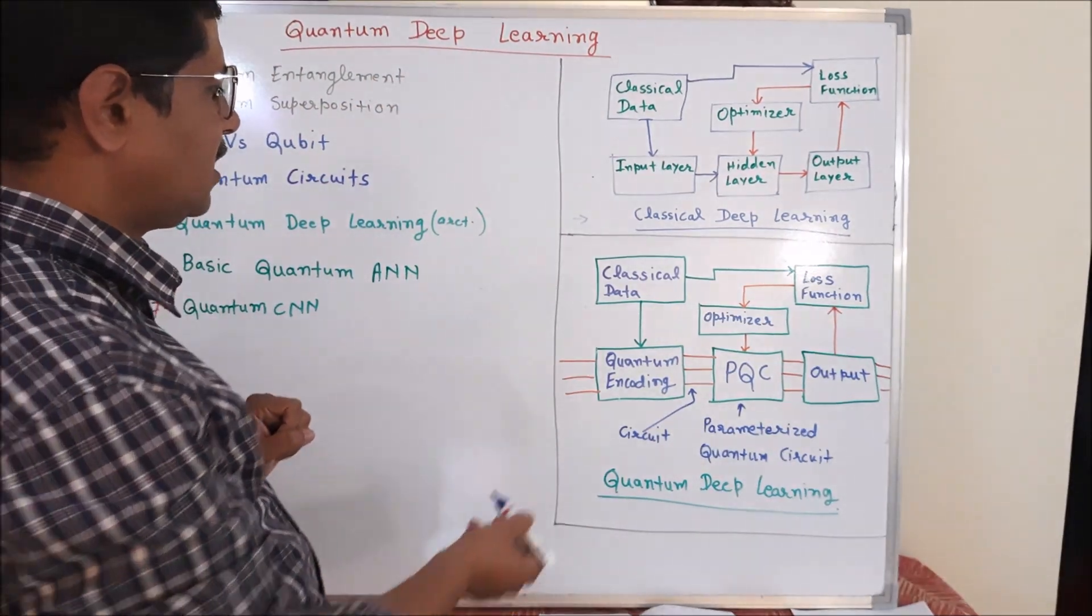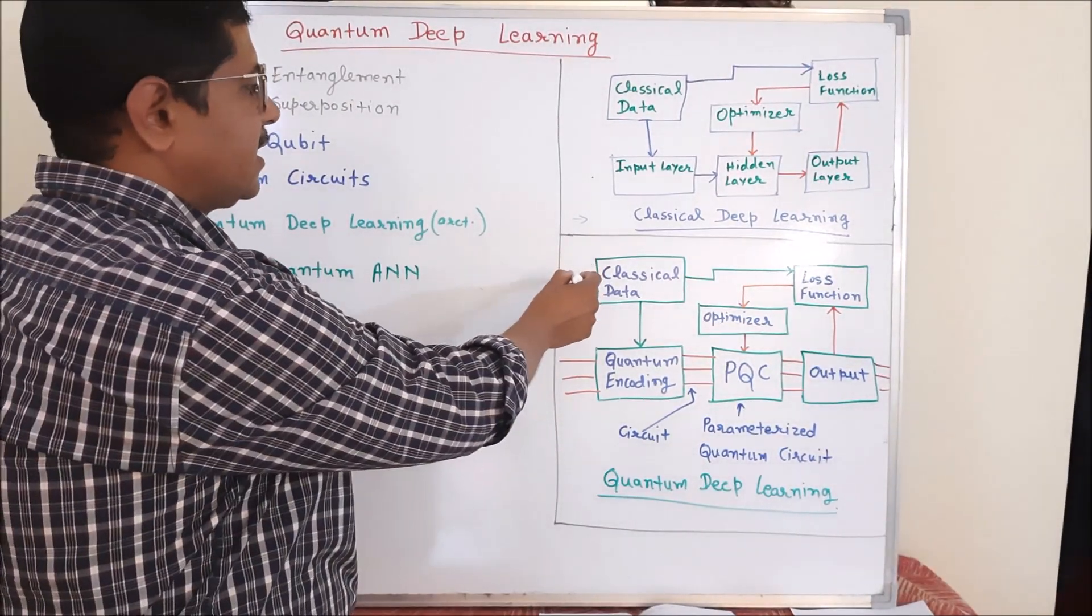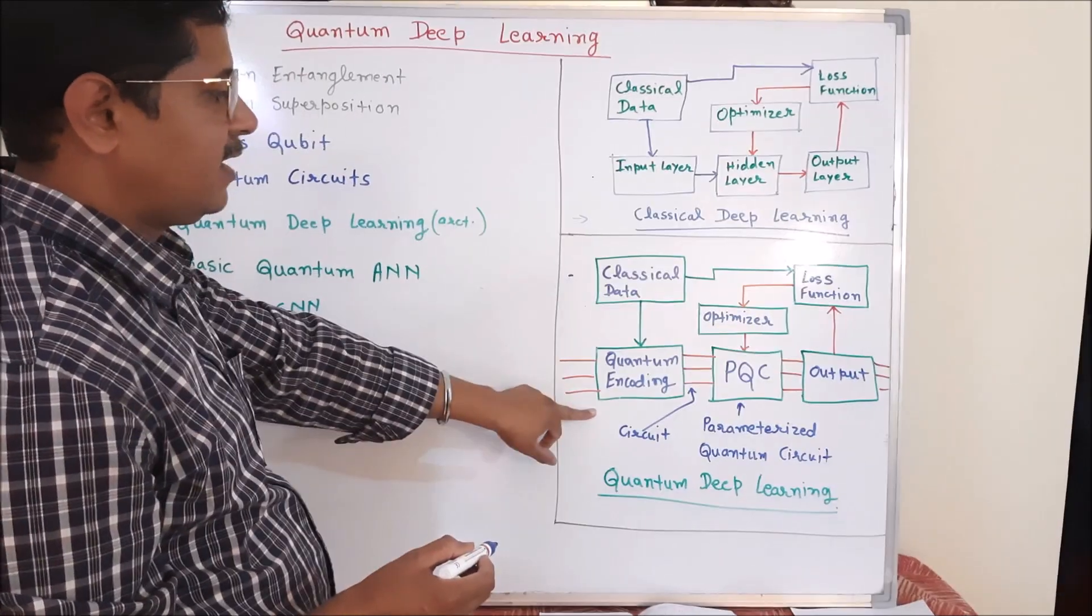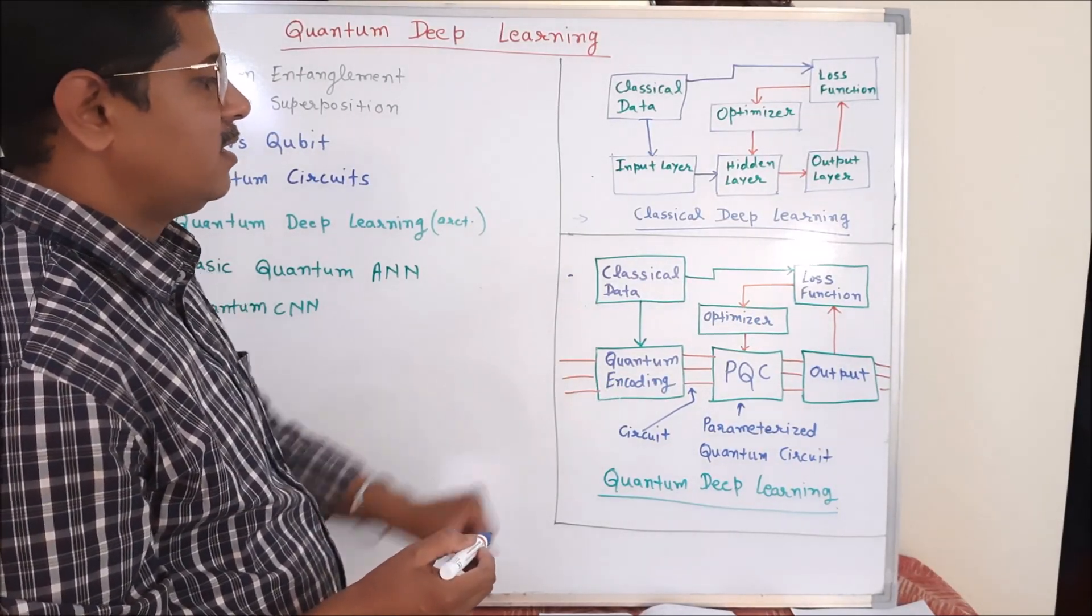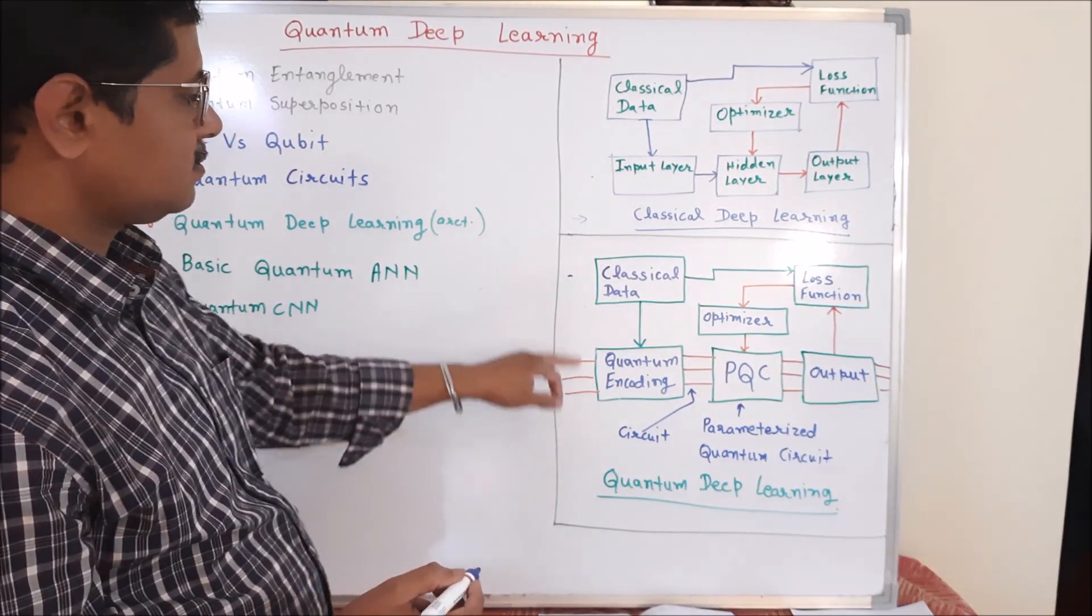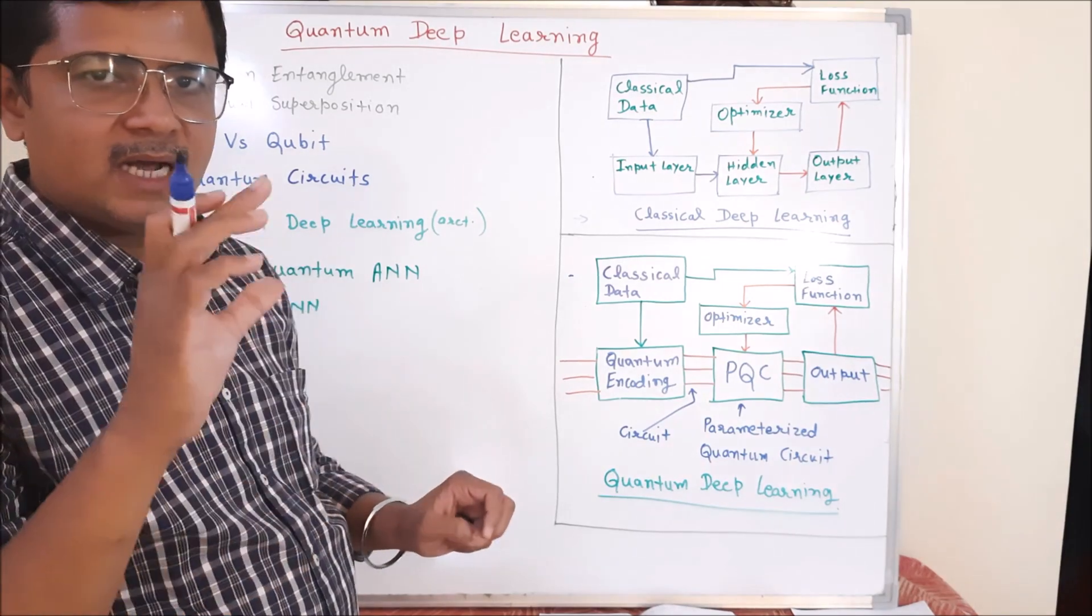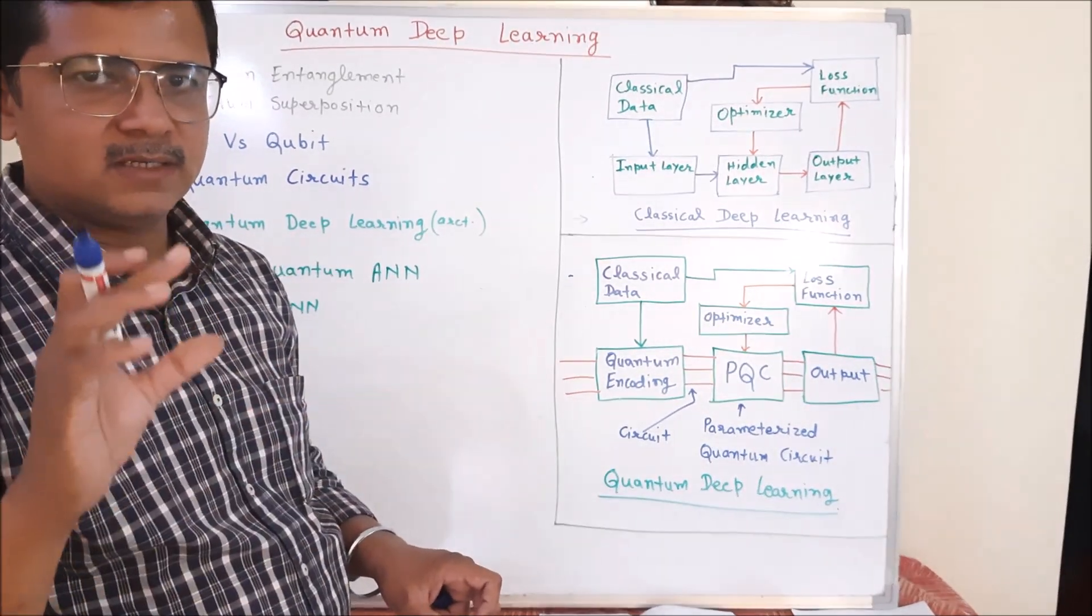So this is the classical deep learning architecture. Now, come to the quantum deep learning architecture. In quantum deep learning architecture, classical data is almost the same. After that, we pass the data and it comes into the quantum encoding.